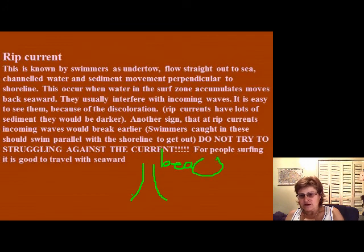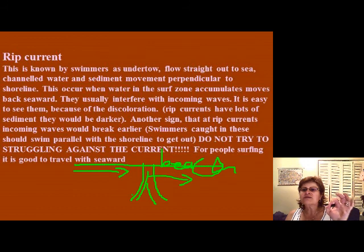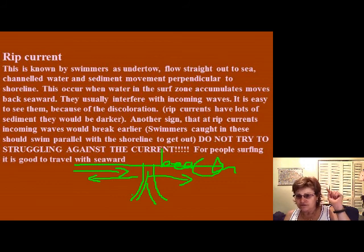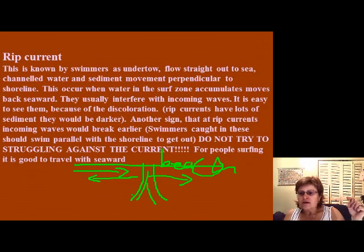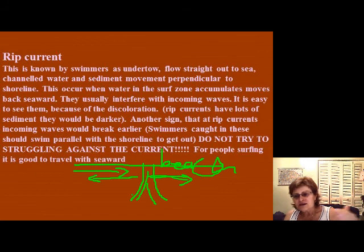The safest way to escape a rip current is to swim parallel with the shoreline in the direction of the longshore current. If you try to go against the longshore current, it will take you right back. Before you go in the water, check which way the longshore current is flowing, so it's in your brain. If you go the wrong way, the longshore current takes you right back to the rip current. Remember: do not fight the current — swim parallel to the shoreline in the direction of the longshore current.